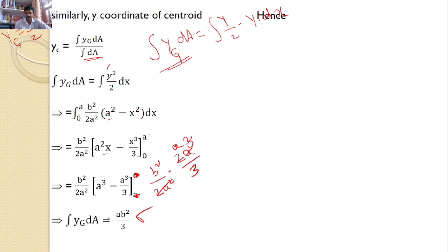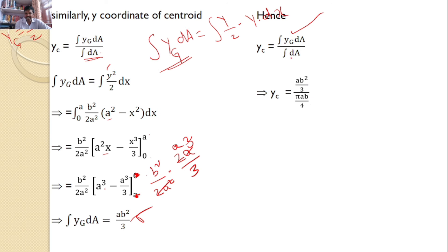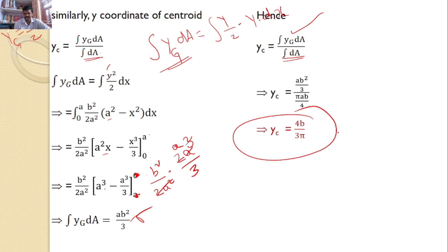Now we can calculate YC. YC = ∫YG dA / ∫dA = (AB²/3) / (πAB/4). After simplification, YC = 4B / (3π). This is the Y-coordinate for the one quarter of the ellipse.